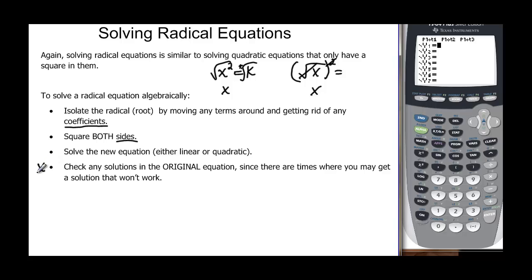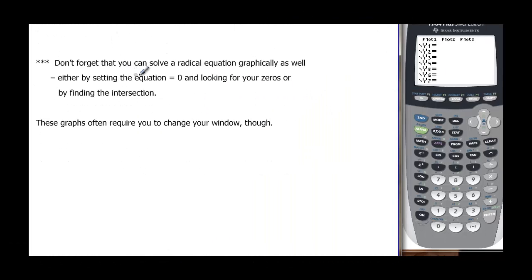The key thing is you cannot omit this step, and that is to check. Because sometimes you get a linear or quadratic that has answers that solve it, but those answers wouldn't fit with the radical. You can solve radical equations graphically as well — either set them equal to zero and look for zeros or x-intercepts, or find the intersection of the two sides. The only problem with graphs is they require you to change your window often, so that can be tricky.